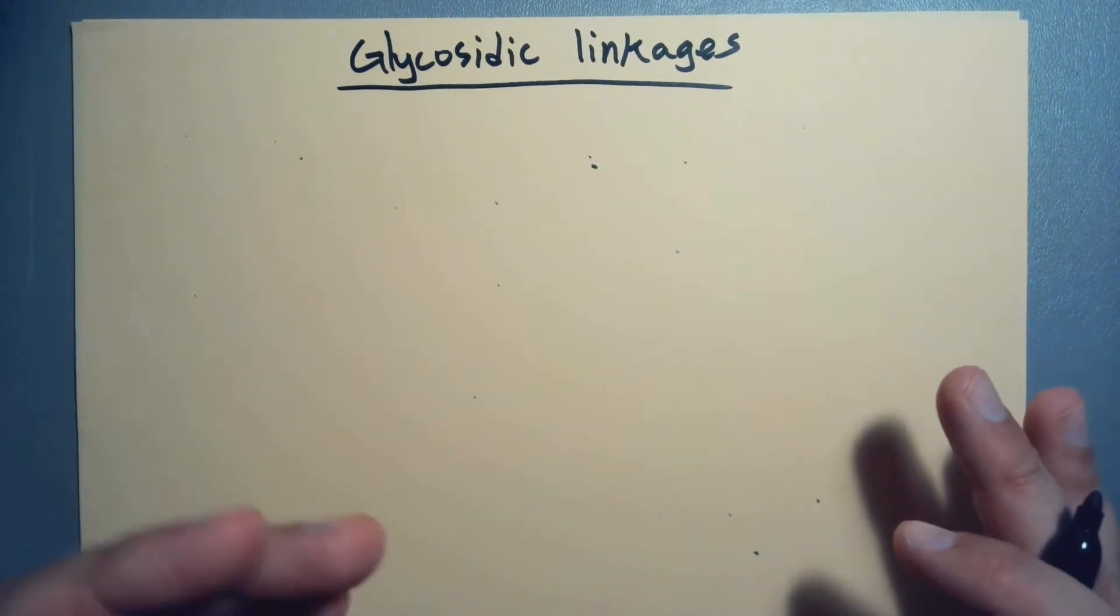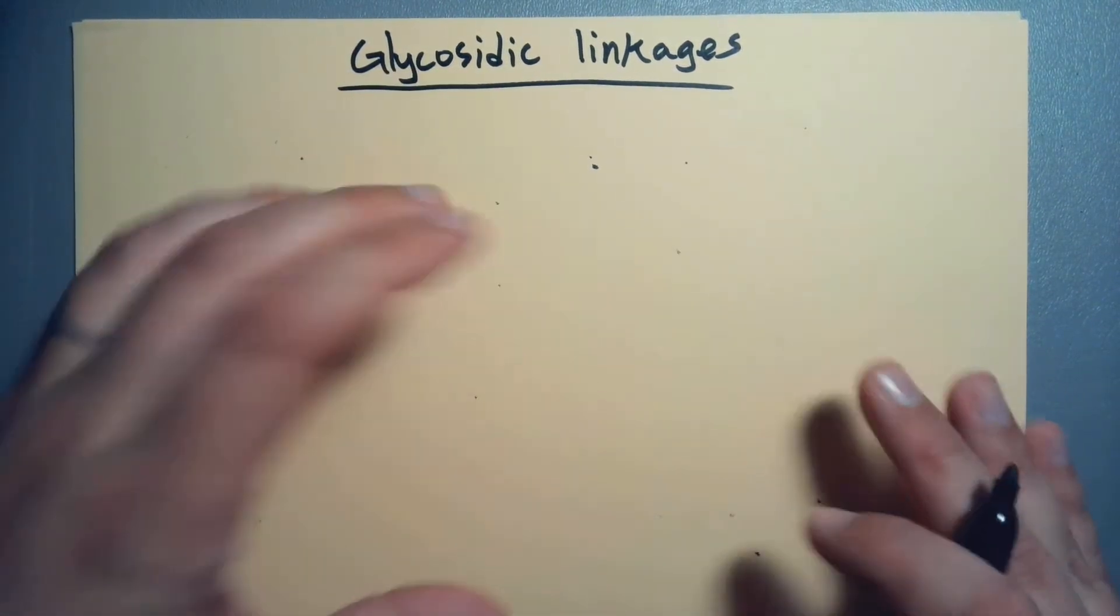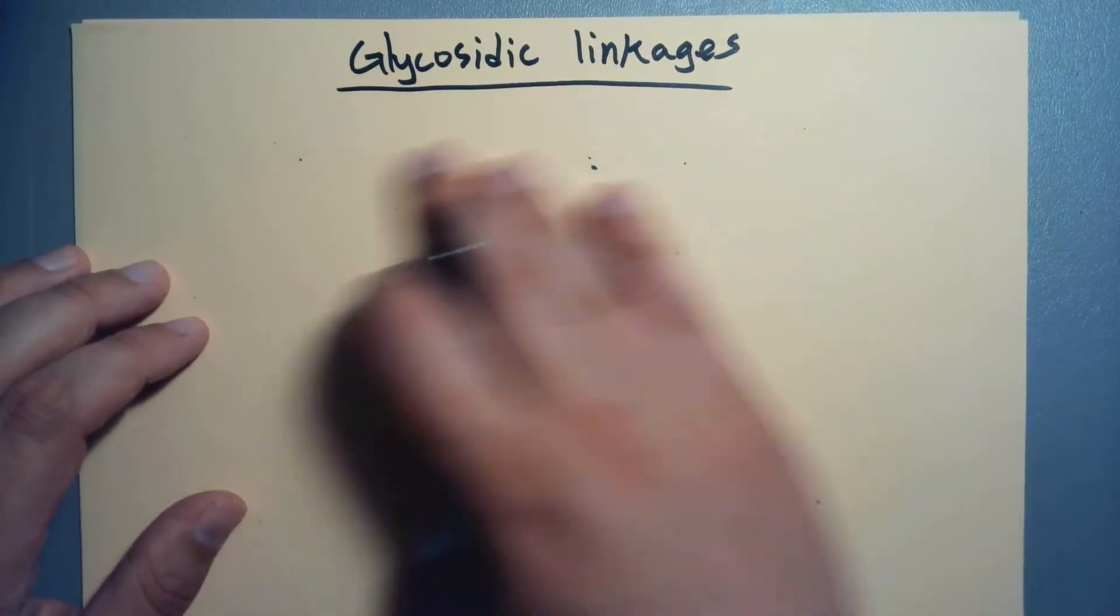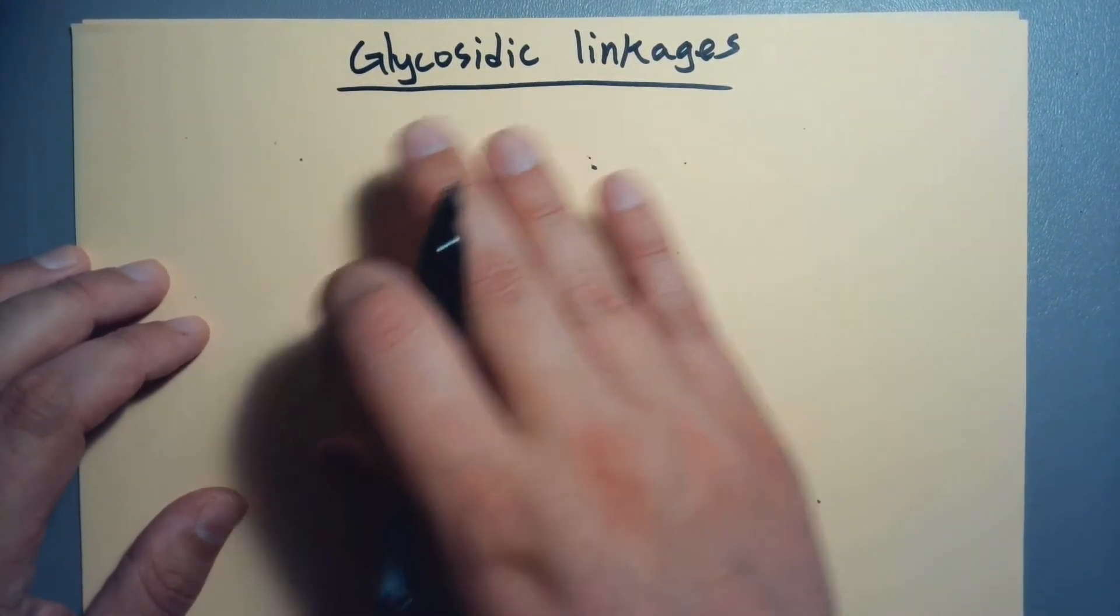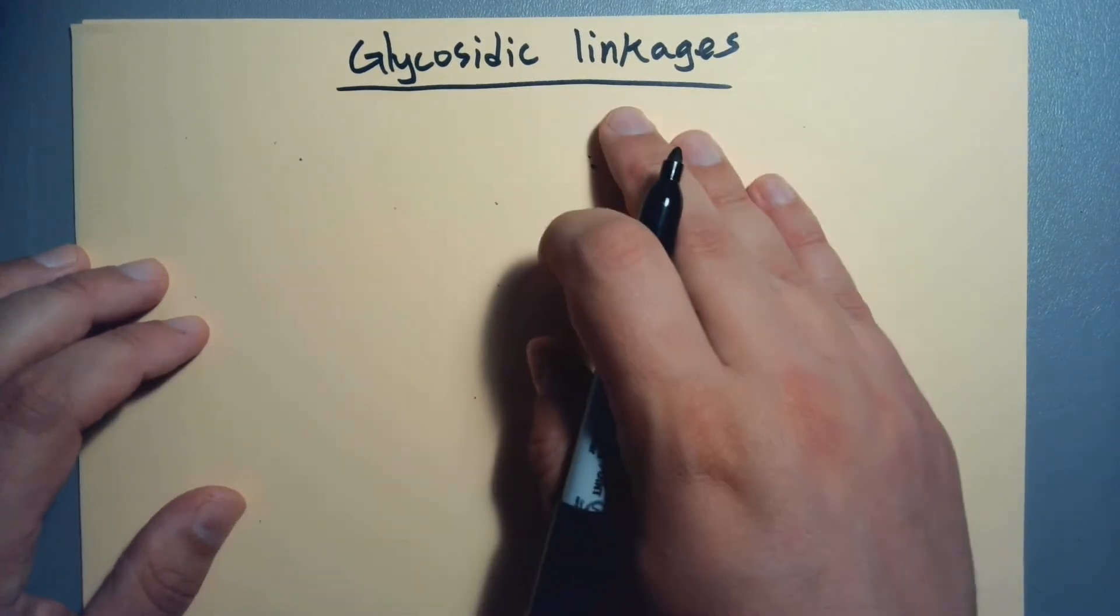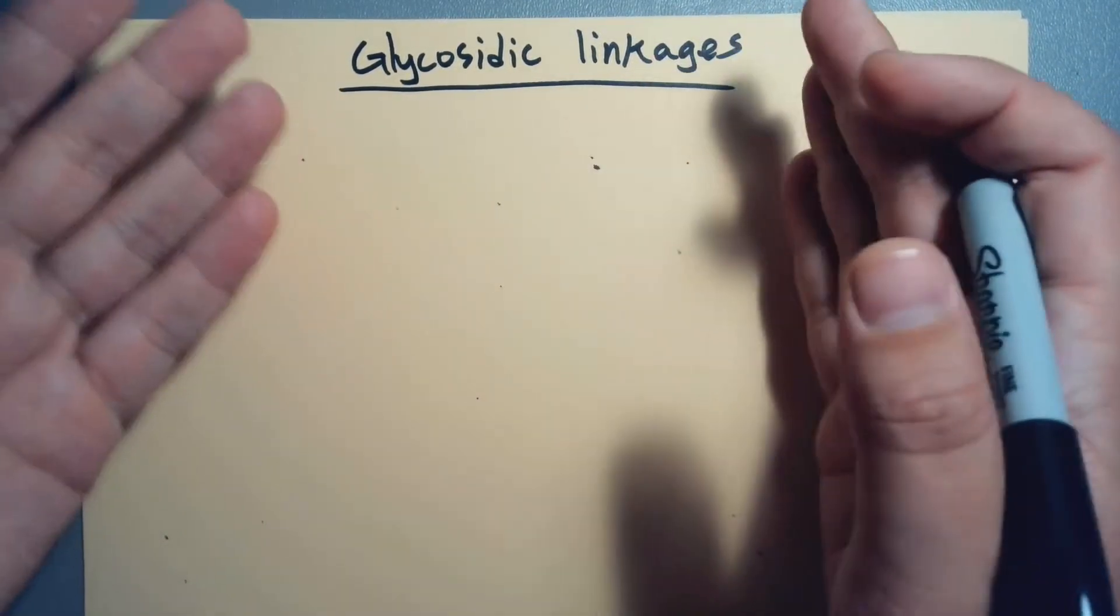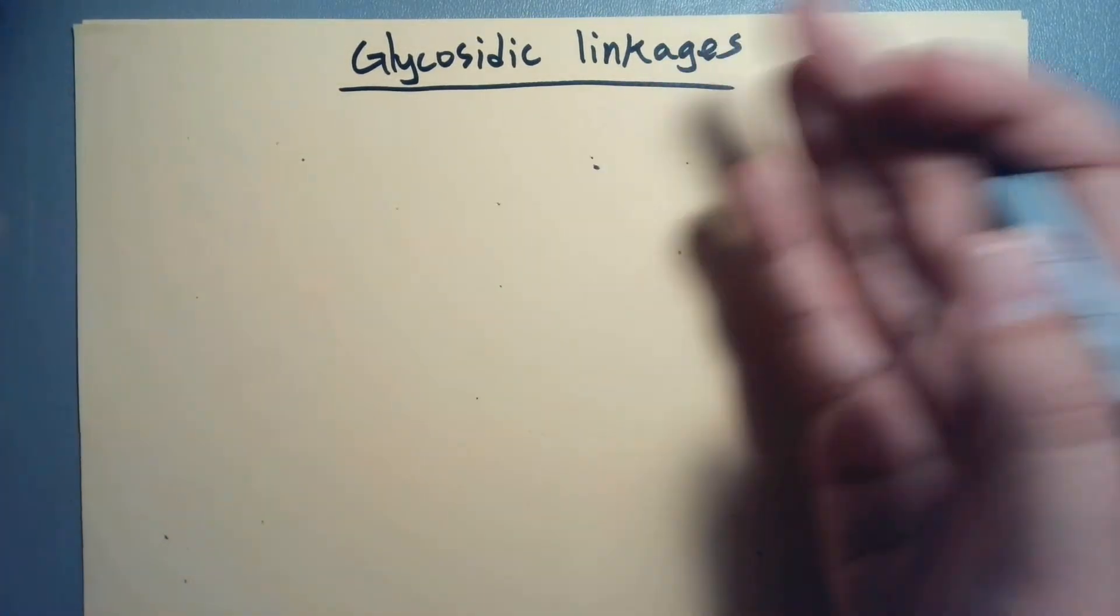So these result from condensation reactions. These are the bonds that make the large molecule from the pieces. So you've seen these types of bonds before, and in the case of sugars, we have a special name for them. So it's not anything new, it's just a scary new name for something you've pretty much seen before.